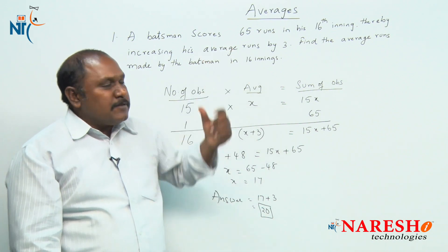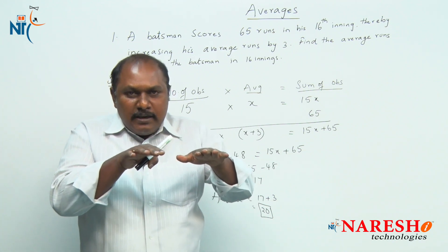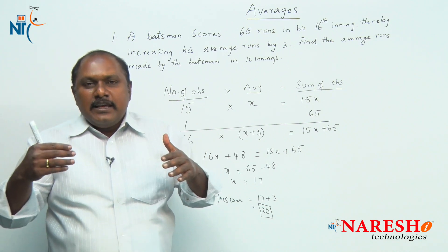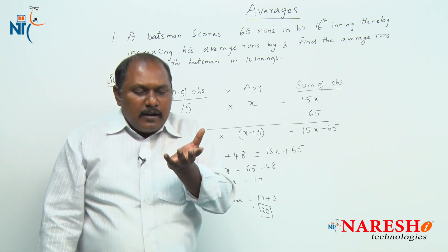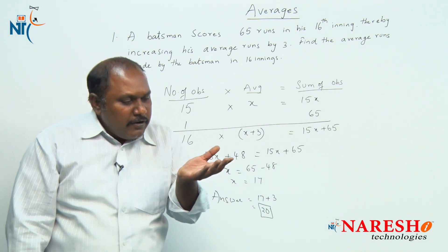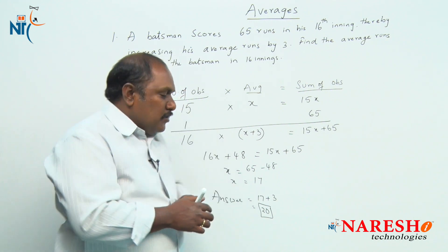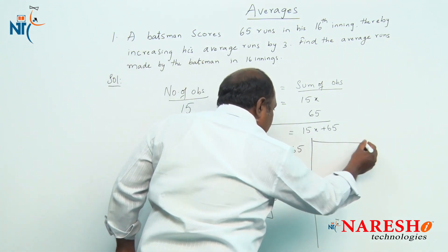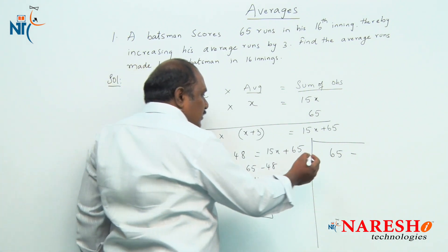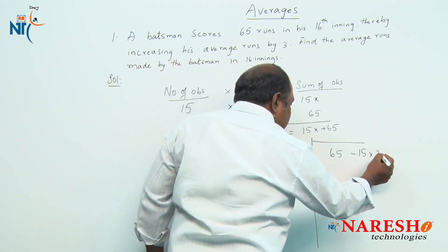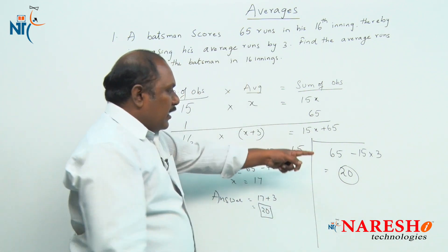We are talking about the 16th inning, meaning the batsman has already played 15 innings. In those 15 innings there may be some average runs he might have scored, but when he played the 16th inning that average increased by 3. So from where are we giving these 3 runs to all 15 innings? Definitely from the 16th inning. From 16th inning, which had 65 runs, we give away 3 runs each to all the remaining 15 innings. So the average after the 16th inning should be 65 minus 15 into 3, which is 65 minus 45, equals 20. A direct answer.